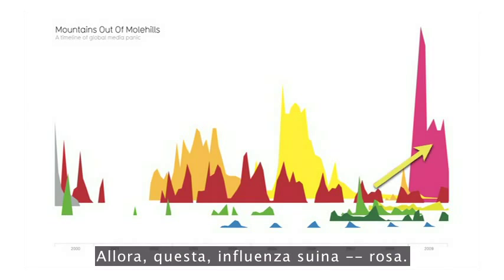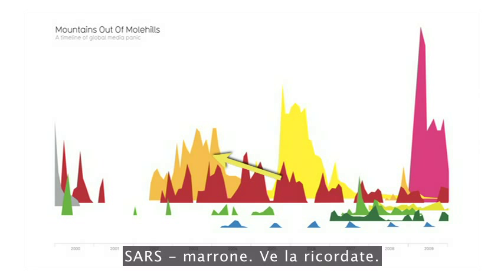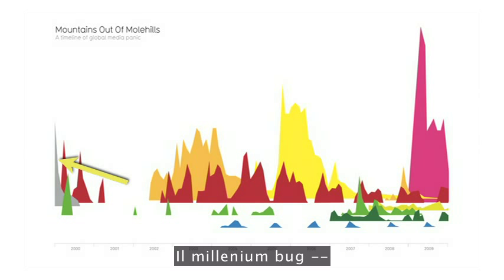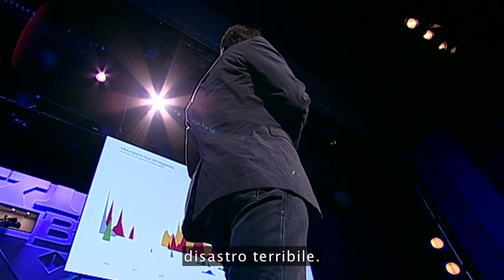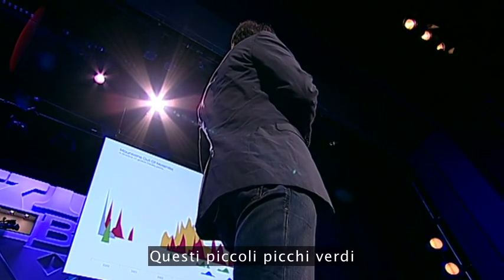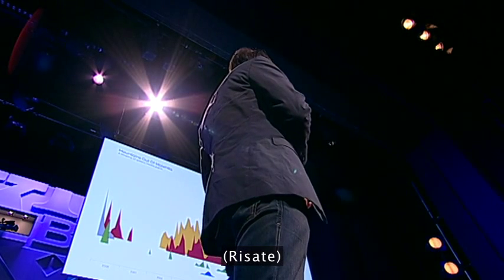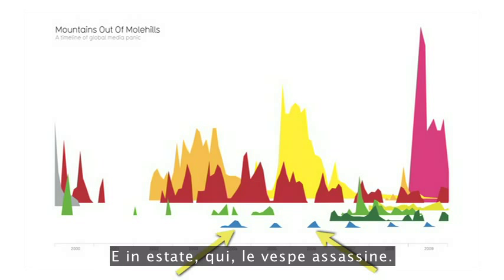So: swine flu — pink. Bird flu. SARS, brownish here. Remember that one? The millennium bug — terrible disaster. These little green peaks are asteroid collisions. And in summer here, killer wasps.